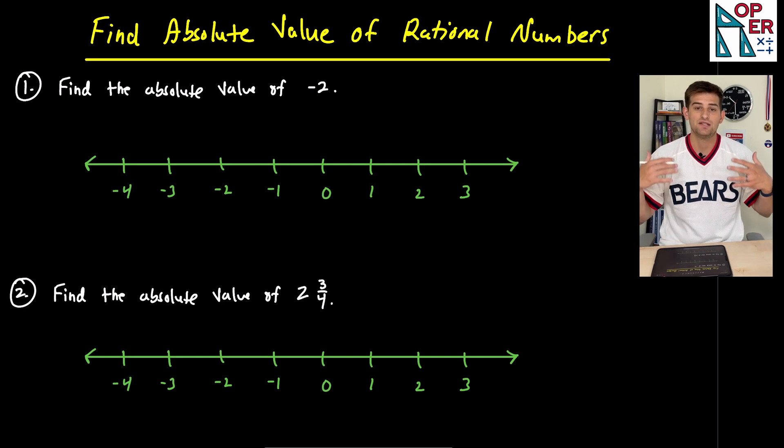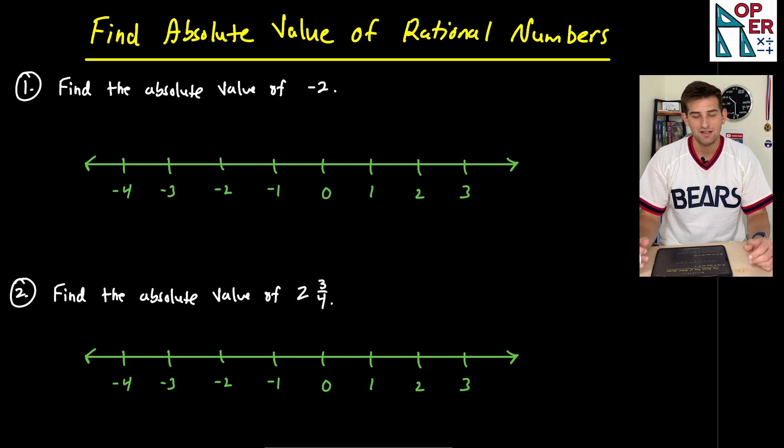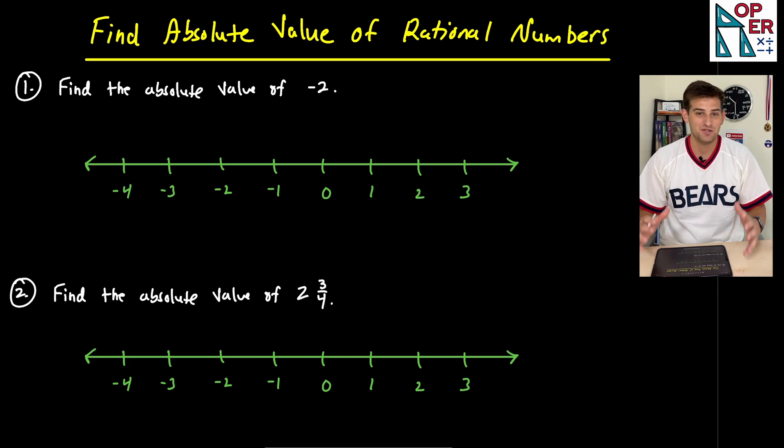So absolute value needs to be positive, either positive or zero. The absolute value of zero would just be itself.